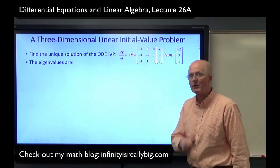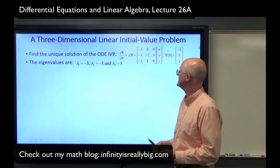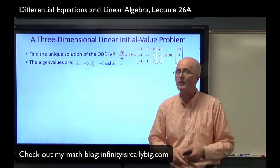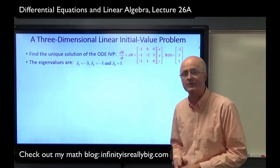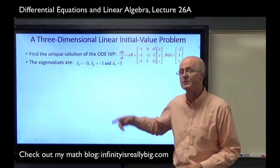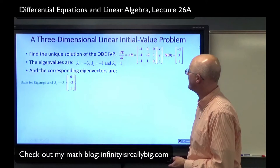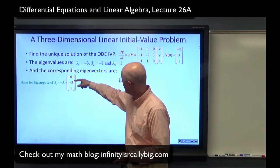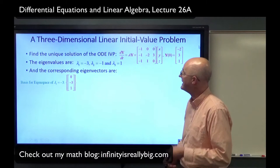With technology, the eigenvalues can be found to be fairly simple real numbers: lambda 1 is negative 3, lambda 2 is negative 1, and lambda 3 is positive 1. Three distinct real eigenvalues. We know from theory that this means the corresponding eigenvectors are linearly independent — they form a basis for R3, three-dimensional space. When we ultimately generate a linear combination of solutions related to these eigenvalues and eigenvectors, it will be a general solution allowing us to solve any initial value problem.